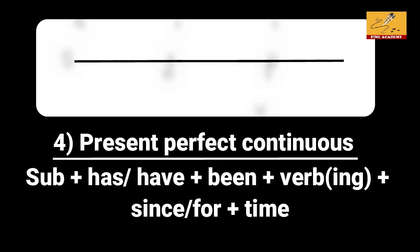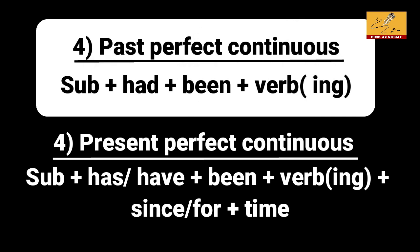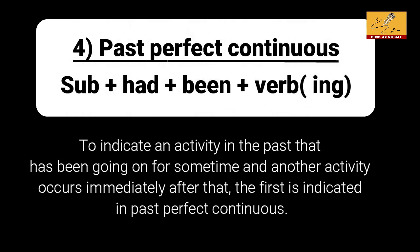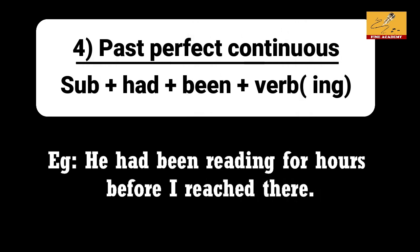Now, past perfect continuous. For present perfect continuous we use has/have been, but for past perfect continuous we use 'had been'. Structure: subject plus had been plus verb ing form plus object. For example: 'He had been reading for hours before I reached there.'